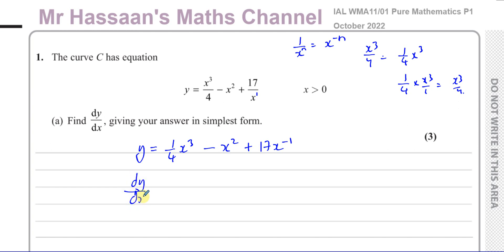Now we're ready to differentiate, so we write dy/dx. One of the marks you get is by taking 1 from the power. The first thing we do is multiply by the power: 3 times 1 quarter gives 3 over 4, and then we take 1 from the power to get x squared. That's one mark — if you take 1 from each power, you get a mark for that. Then minus x squared gives minus 2x.